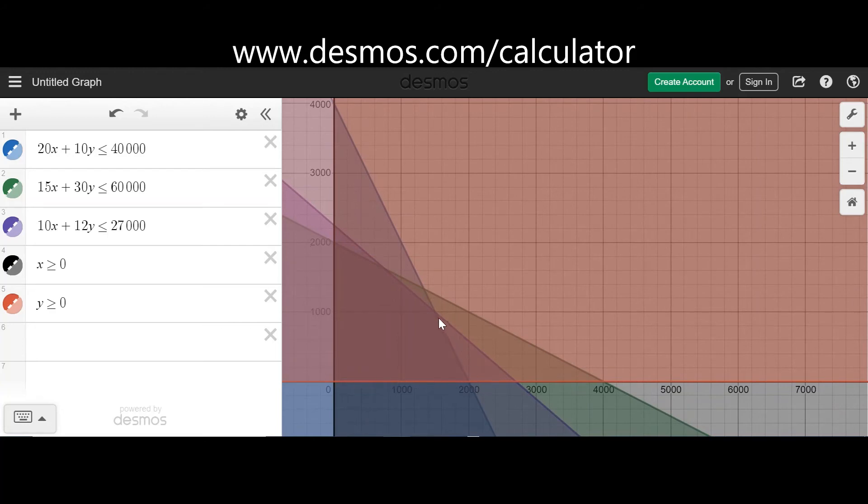I'll quickly have a look at the feasible region. The darker region is the feasible region. Now if it's hard to see the feasible region, like I mentioned in my previous video, you can reverse these signs and you'll get a shaded region which will represent the feasible region. In this case we've got these, so I'll quickly click on those.